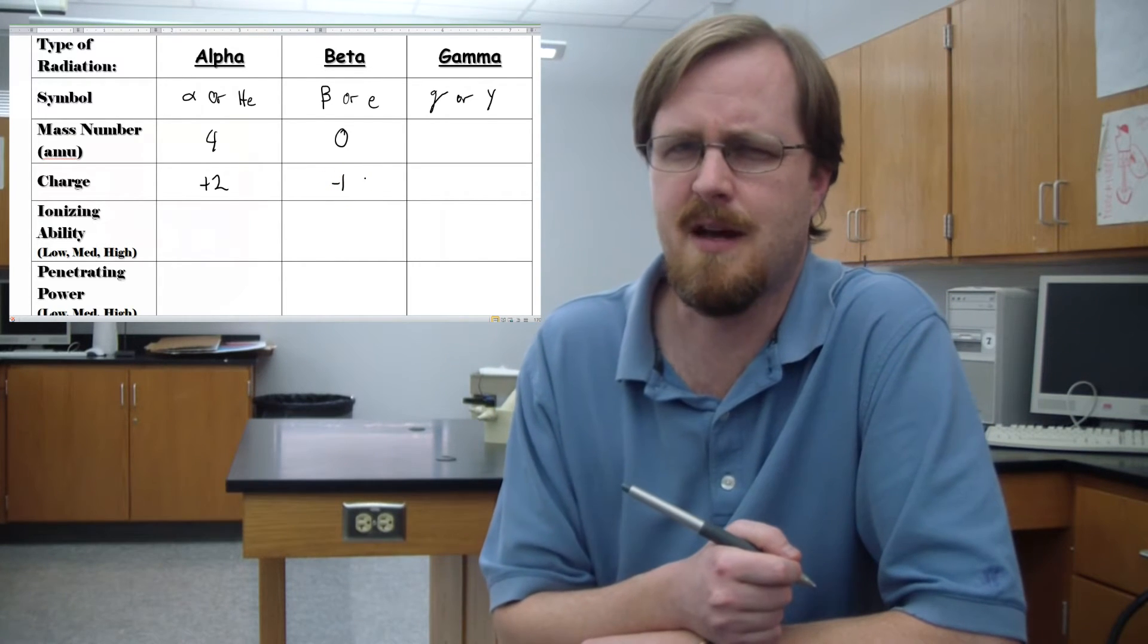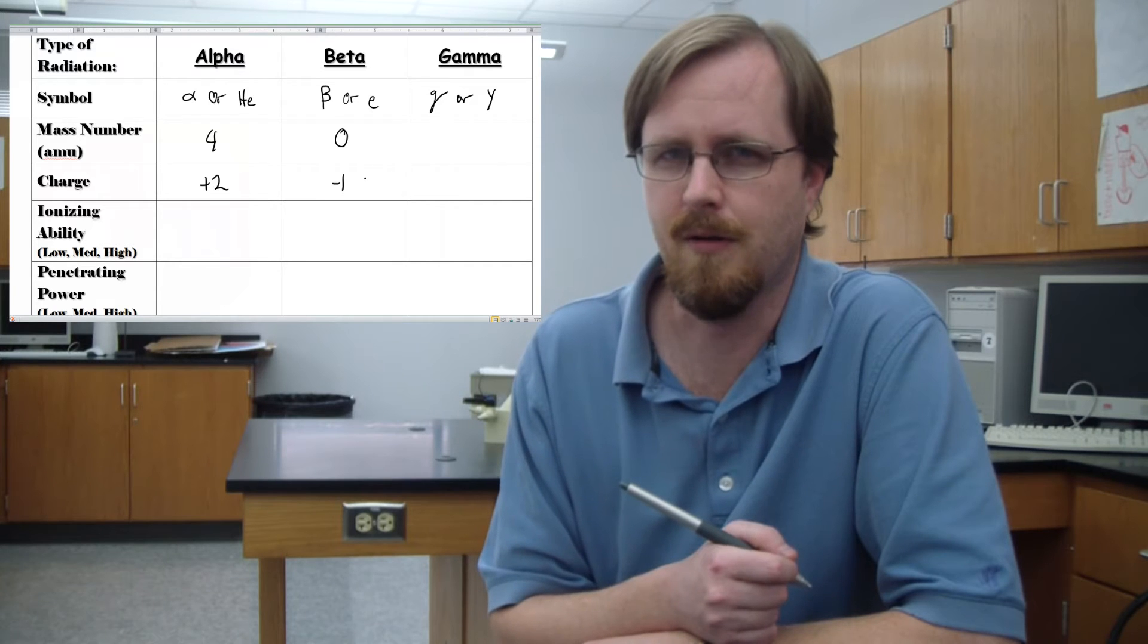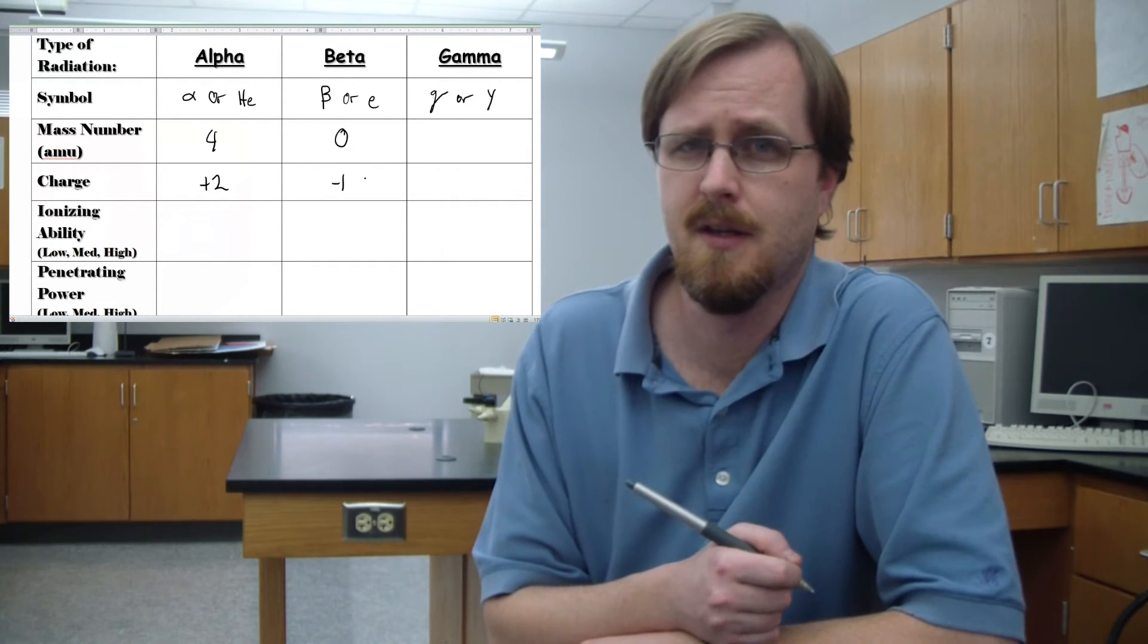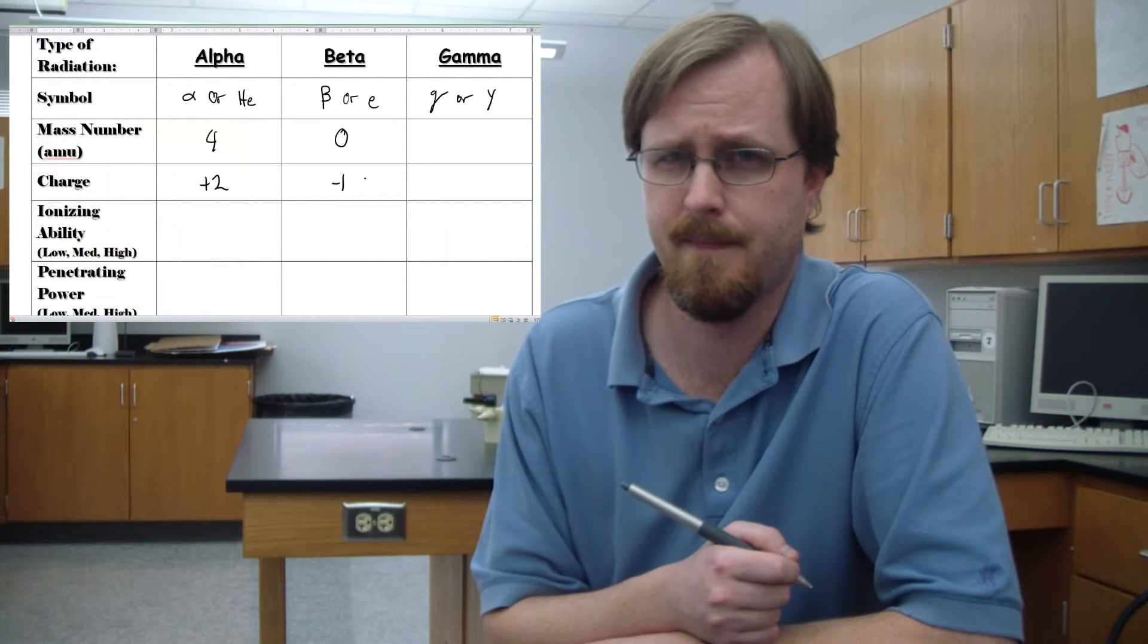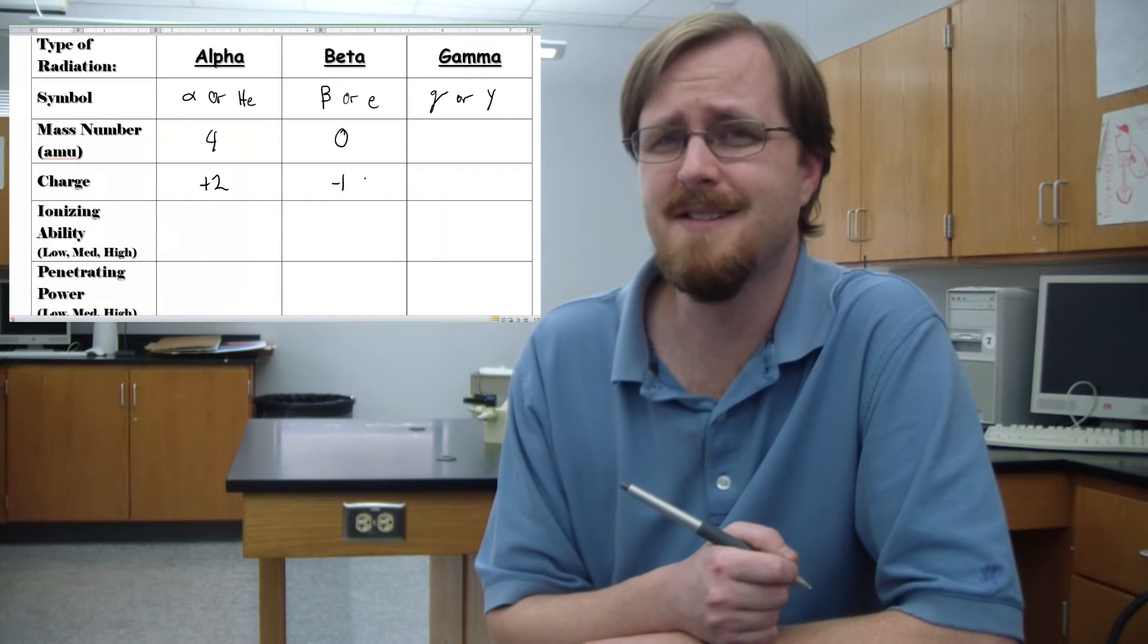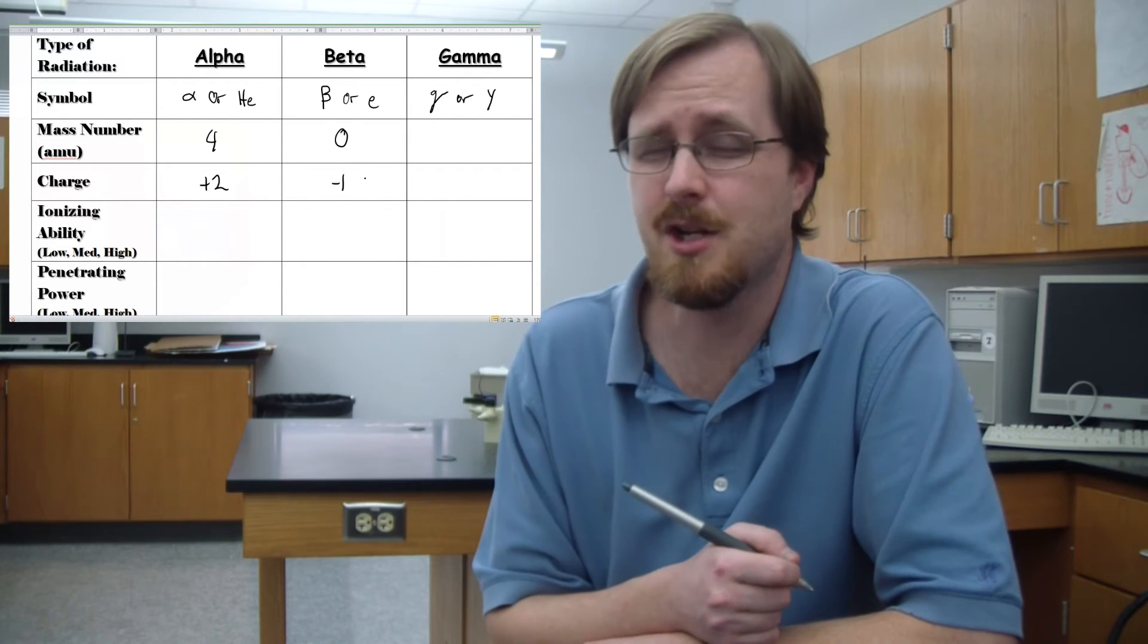Now, before we go any further, let's take a moment and stop and think about this. The beta particle, which is coming from a nucleus, is an electron. Are there electrons in the nucleus? Well, as it turns out, there actually are.